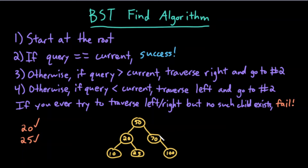What if I'm looking for the element 60? I start at the root. Is 60 equal to 50? No, it's not. 60 is greater than 50, so I should traverse to the right subtree. Is 60 equal to 70? No, it's not. 60 is less than 70, therefore I should check the left subtree. But 70 doesn't have a left child. Therefore, 60 cannot exist in this tree.